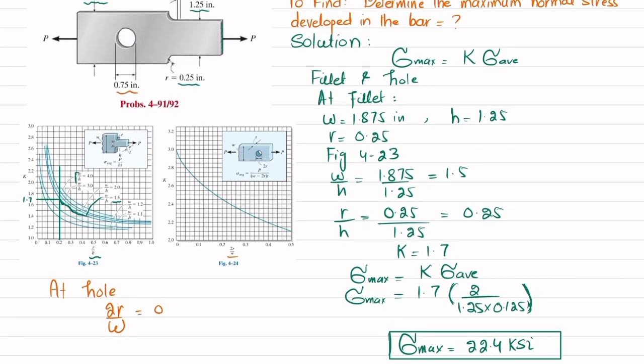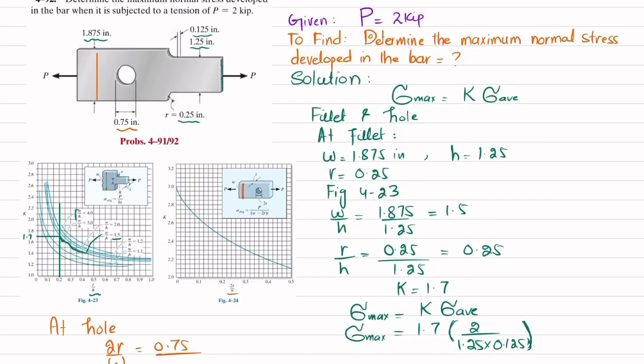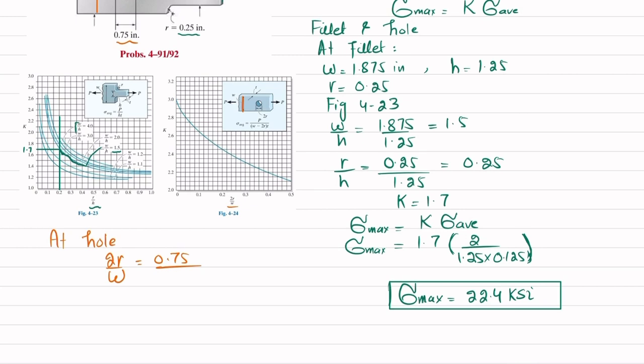At the hole, we will need 2r/w. So 2r is the diameter of the hole, which is 0.75, and w is this height, which is 1.875. That will give you 0.40. At a value of 0.40, draw a vertical line that will intersect this curve.